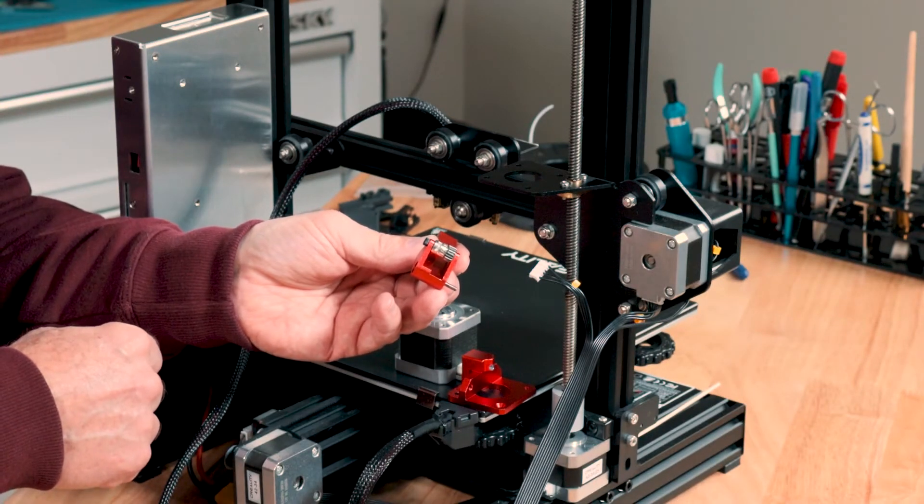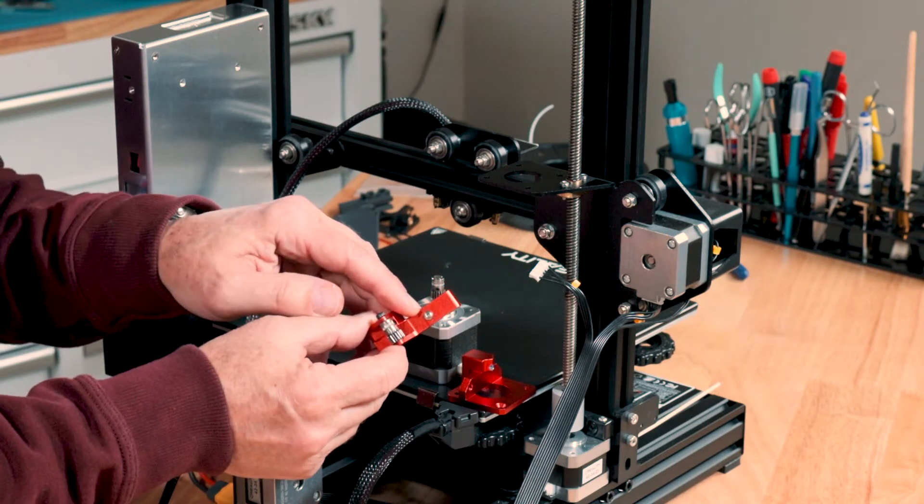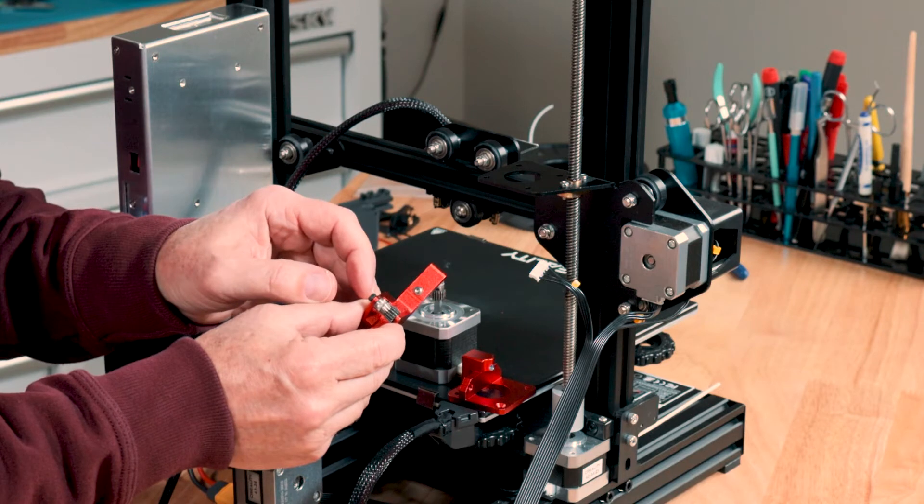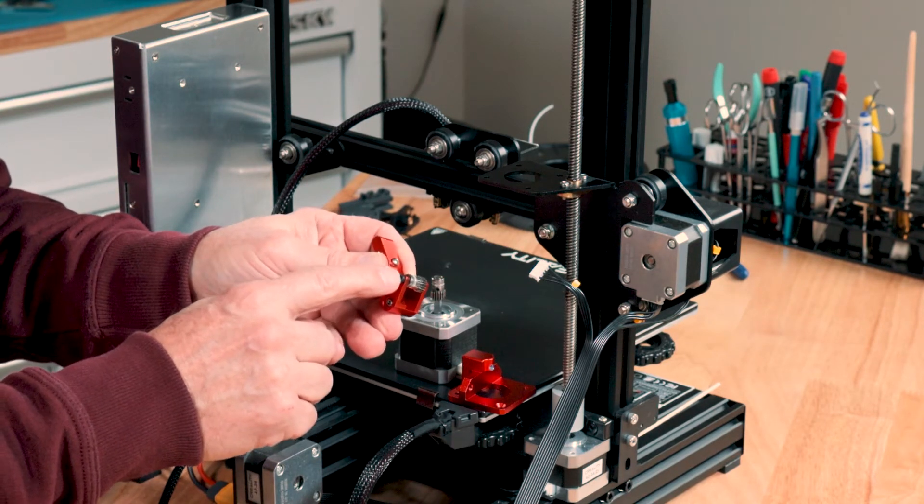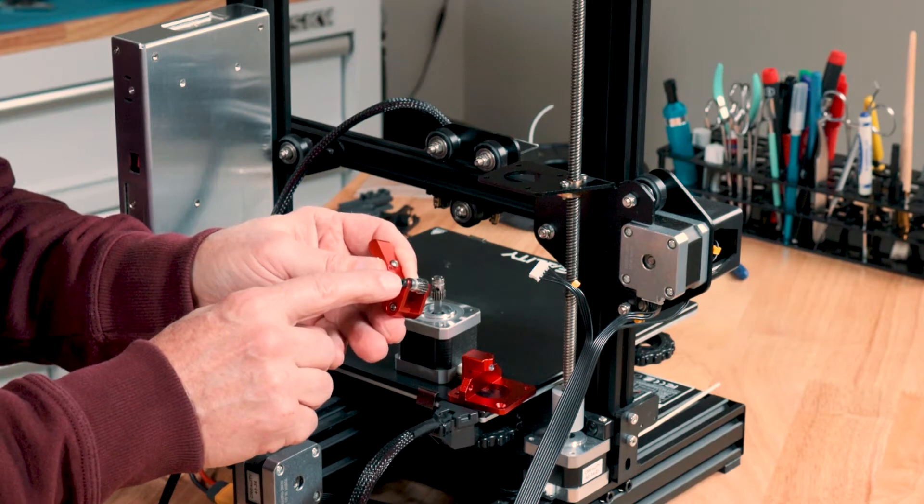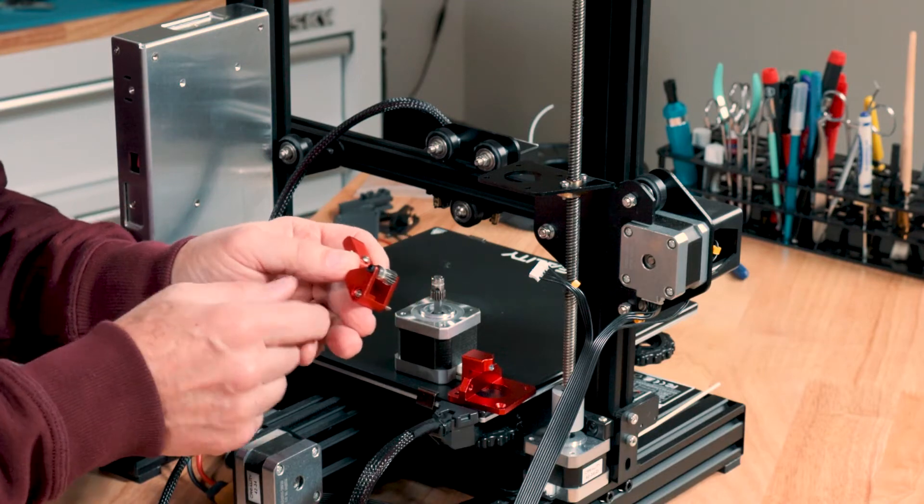When you assemble your dual gear extruder out of the box, you're going to have to put this screw in it here. And what that's going to be is a base for the tension spring. You're going to have to put this screw in here, which you don't want to over tighten, but you want to make sure it's snug enough. And when you're installing the roller bearings, you need to put some form of lubrication on it.